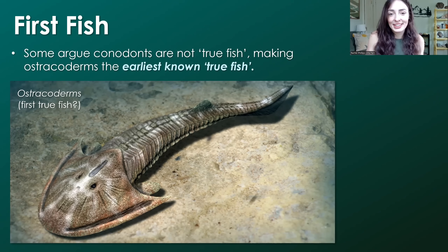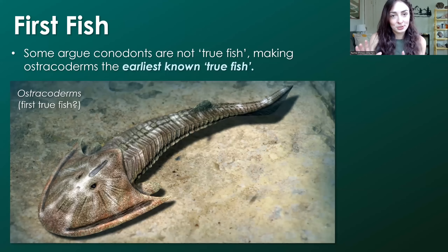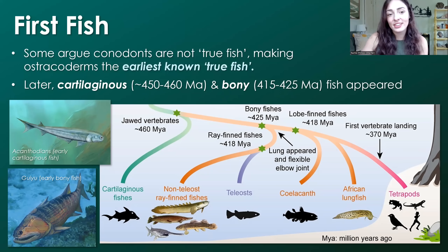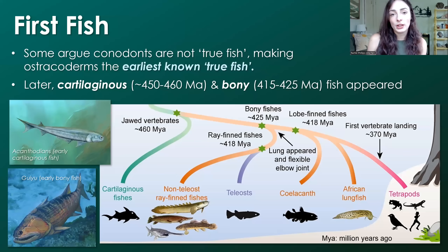Interestingly, in the ancient seas where these fish were evolving, they were the low guys on the totem pole. There were some major, huge, terrifying invertebrate predators out there — if you're interested in those, I'll link my video about huge sea scorpions above. In any case, these early fish later led to the two major groups of fish we have today: cartilaginous fish and bony fish. Cartilaginous fish came first around 450 to 460 million years ago, and bony fish appeared around 415 to 425 million years ago.